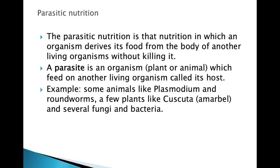Parasitic nutrition is that nutrition in which an organism derives its food from the body of another living organism without killing it, and it always harms the other organism. A parasite can be a plant or animal which feeds on other living organisms, called hosts. Examples of animal parasites are Plasmodium and roundworms. Examples of plant parasites are Cuscuta, also popularly called Amarbel, and many fungi and bacteria.